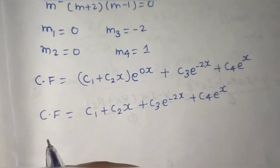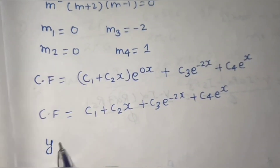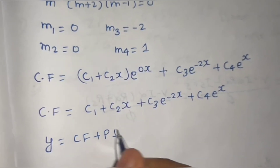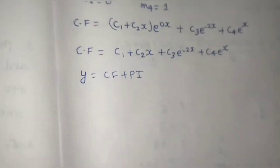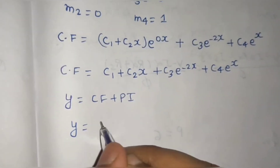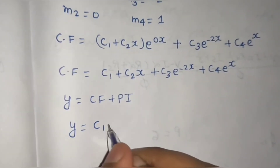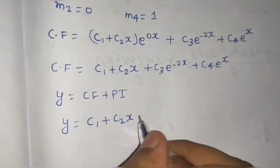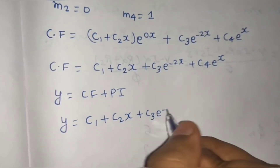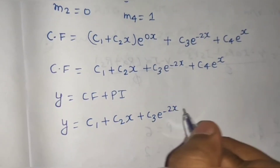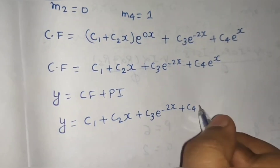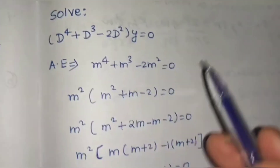Since the particular integral is 0, the final solution equals the complementary function: y = c₁ + c₂x + c₃e^(-2x) + c₄e^x. I hope you understood this question.